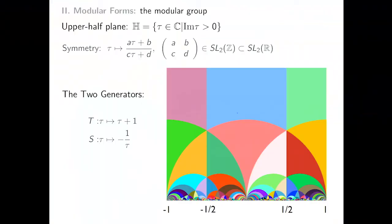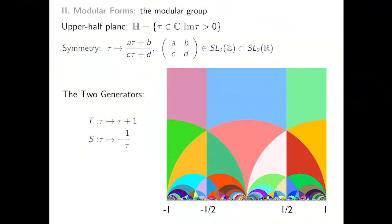The first generator is usually called T. What it does is shift a point on the upper half plane by one — that's why you see the parallel lines here. The other generator does something more interesting: it's a negative inversion, mapping tau to minus one over tau. It maps something high up near i-infinity to zero. That's also why you see the half circle of radius one here — it's the boundary of the fundamental domain. Each colorful block represents a copy of the fundamental domain of SL(2,Z).